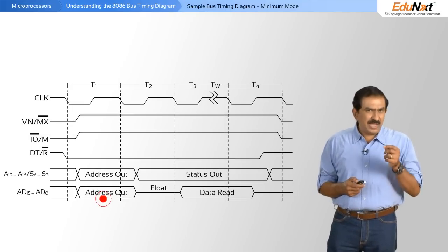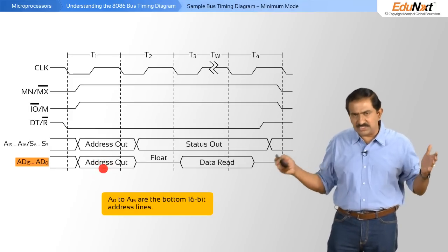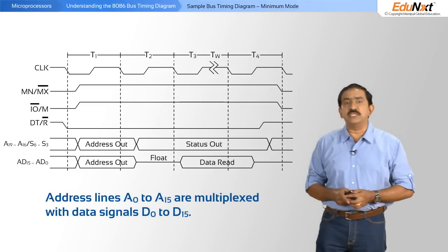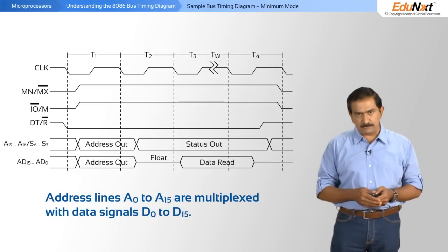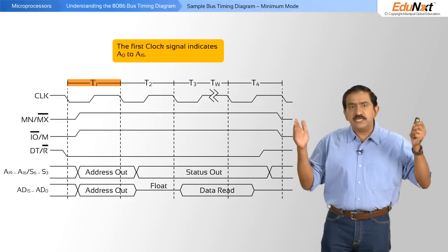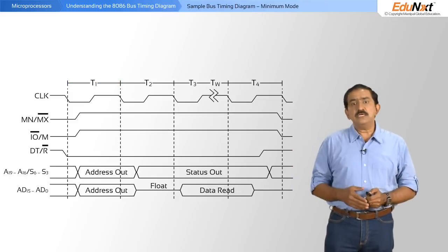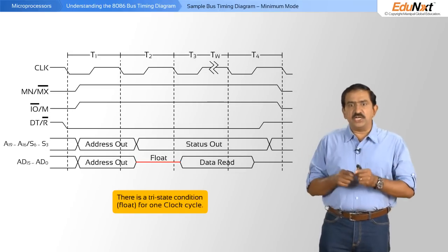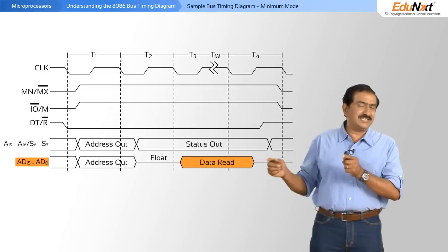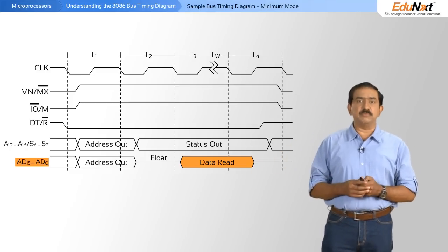In addition, you have A0 to A15 — the bottom 16-bit address lines. In the case of the 8086, this is multiplexed with D0 to D15, the data signals as well. Again, the first clock signal indicates A0 to A15, then there is a tri-state float condition for one clock signal, and subsequently for the remaining two clock signals the same pins carry data information — it acts as the data bus.